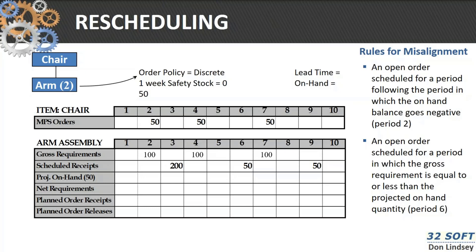The rules for misalignment are that an open order scheduled for a period in which the on-hand in the previous period goes negative — period 2 — it will expedite it. Or if the order is in a period where the gross requirements is equal to or less than the projected on-hand quantity, it's going to tell us to de-expedite. So you can see it's going to tell you to expedite that 200 from period 3 to period 2.